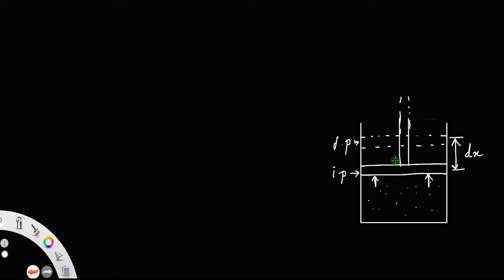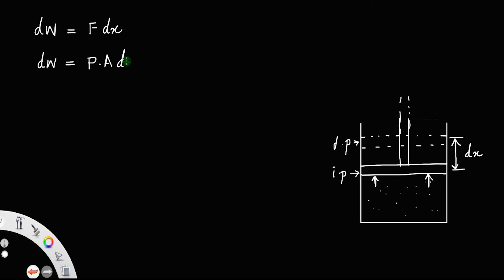The small work done by the gas to move the piston through a distance dx is equal to: work dW is equal to force into displacement. But force is equal to pressure into area, where area means the cross-sectional area of the piston.